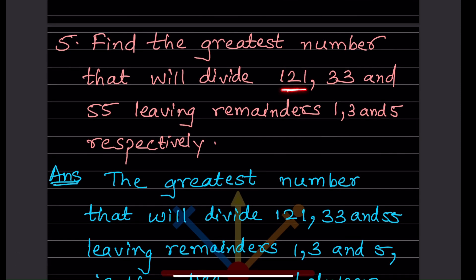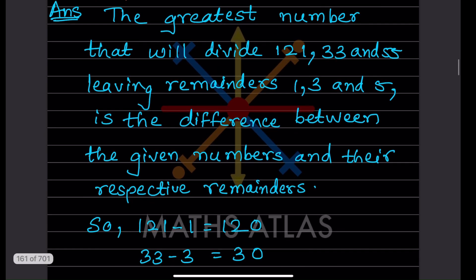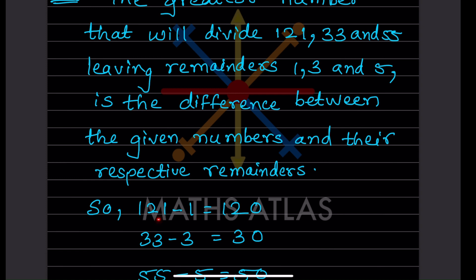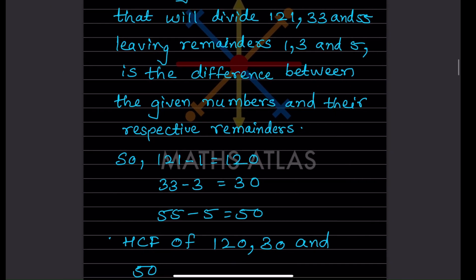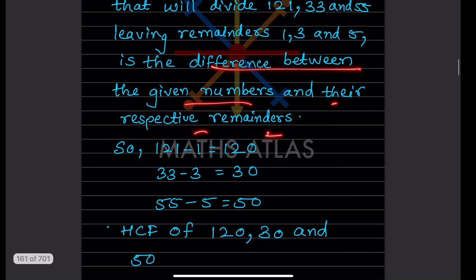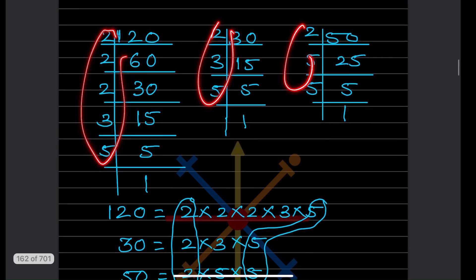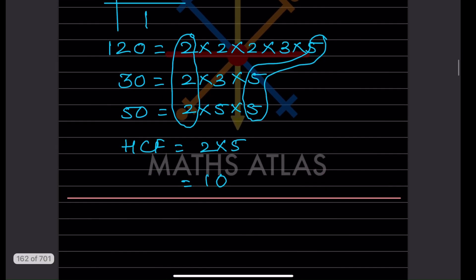Problem: find the greatest number that will divide 121, 133, and 55 leaving remainders 1, 3, and 5 respectively. Subtract each remainder from its number: 121 − 1 = 120, 133 − 3 = 130, 55 − 5 = 50. Now find the HCF of 120, 130, and 50. The common prime factors are 2 and 5, so the HCF is 10. The answer is 10.